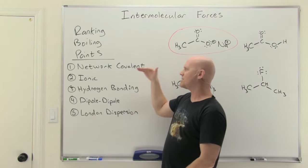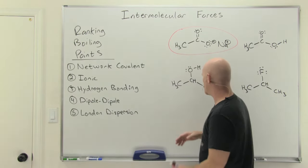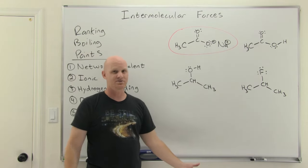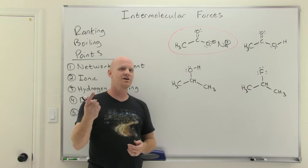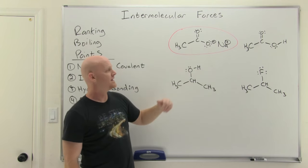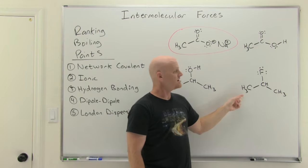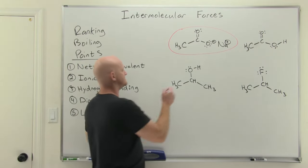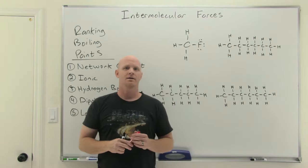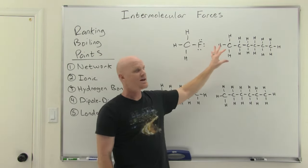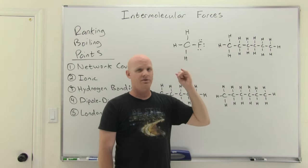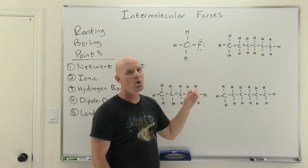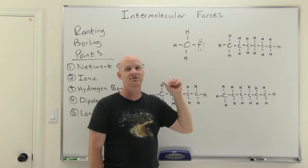Most of the time, you probably won't have network covalent or ionic compounds in your comparisons. In the next example, neither molecule is ionic, so the first thing I look for is hydrogen bonding — an FH, OH, or NH bond. This molecule has an OH bond so it's capable of hydrogen bonding. The other has an F and has H's, but there are no F-H bonds in the structure whatsoever, so it's not capable of hydrogen bonding. Since the one on the left has hydrogen bonding and the one on the right doesn't — done. The one on the left has the higher boiling point.